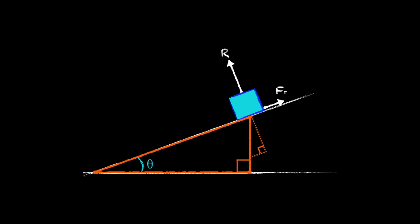So if we chase the angle theta, then what we end up with is that the angle between the line of action of weight and the dotted line perpendicular to the slope is also angle theta.